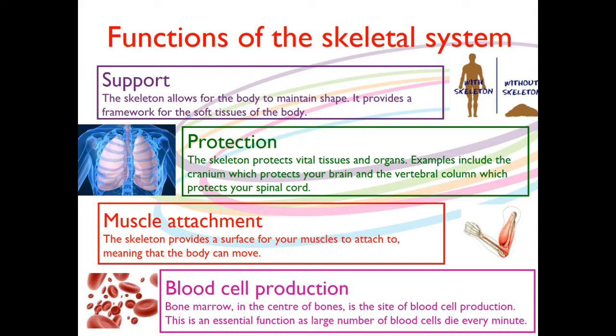The second one is protection. The skeleton protects our vital tissues and organs. Examples include the cranium, which protects your brain, and the vertebral column, which protects the spinal cord. If we think about our cranium, it provides essentially a crash helmet for our brain so it doesn't get damaged — it's all about protection, absorbing impact. Our spinal column is protected by the vertebrae so that if we have any impact from behind, we wouldn't have any damage to our spinal column.